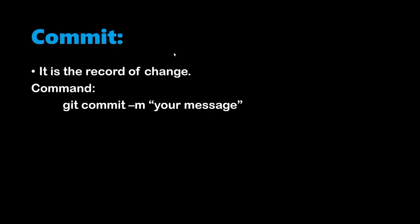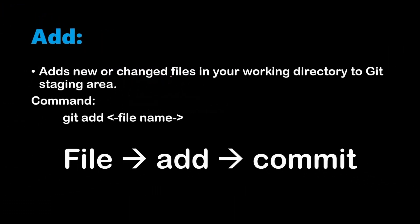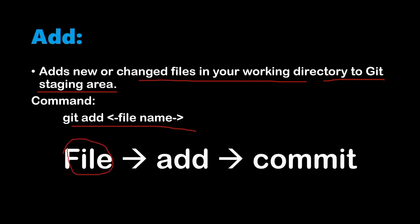In this session we'll see how to commit the changes you have made in your file in your local system. To commit changes you use the git commit -m command. In the previous video I showed you how to add changes — you use git add filename to move files from the working directory to the staging area. If you haven't watched that video, watch it first before continuing.